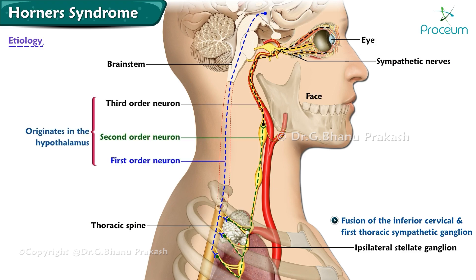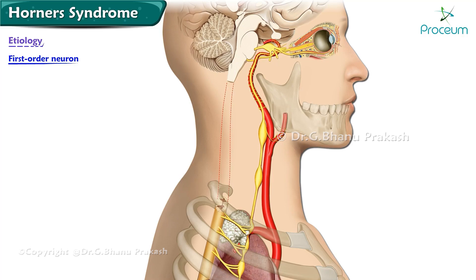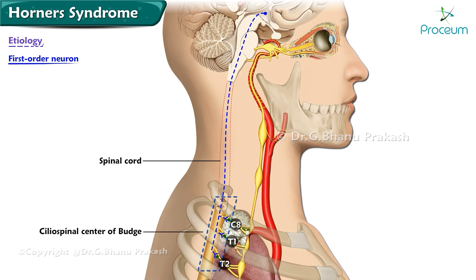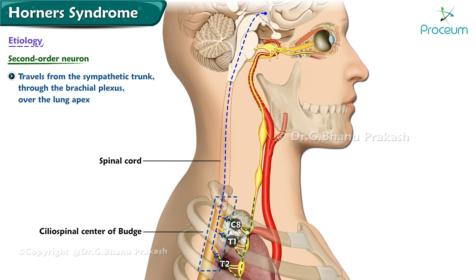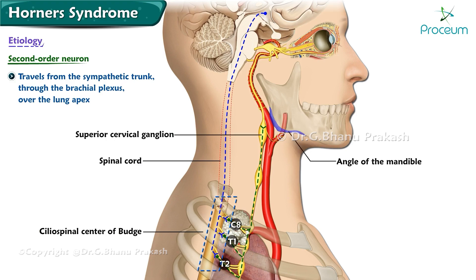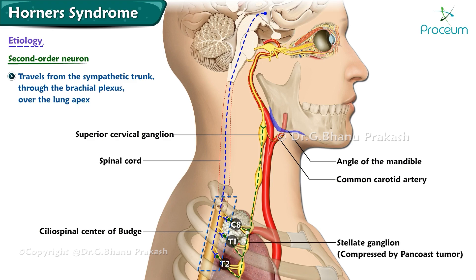Horner syndrome can result from a lesion anywhere along a three-neuron sympathetic adrenergic pathway that originates in the hypothalamus. The first-order neuron descends caudally from the hypothalamus to the first synapse, located in cervical spinal cord levels C8 to T2, also called the ciliospinal center of Budge. The second-order neuron travels from the sympathetic trunk through the brachial plexus over the lung apex, then ascends to the superior cervical ganglion near the angle of the mandible and bifurcation of the common carotid artery.